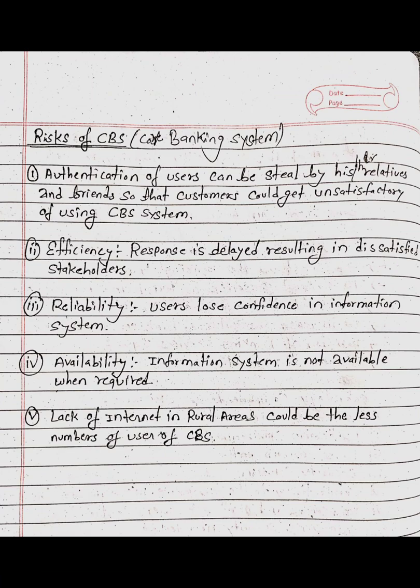Risks of CBS: Authentication of core banking system users can be stolen by relatives and friends, causing customer dissatisfaction. Efficiency: response is delayed, resulting in dissatisfied stakeholders. Reliability: users lose confidence in the information system. Availability: information system is not available when required. Lack of internet in rural areas could result in fewer users of CBS.